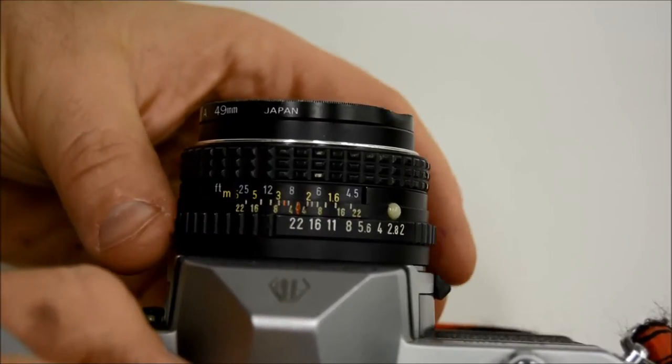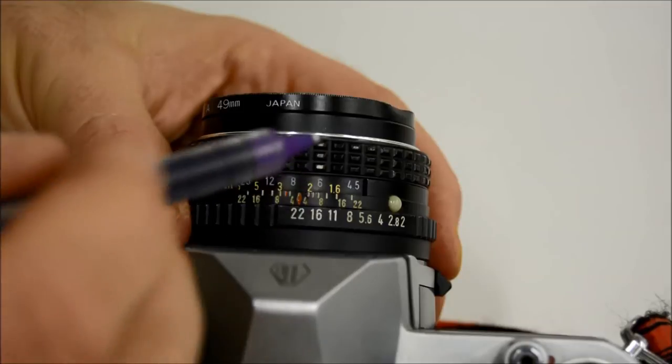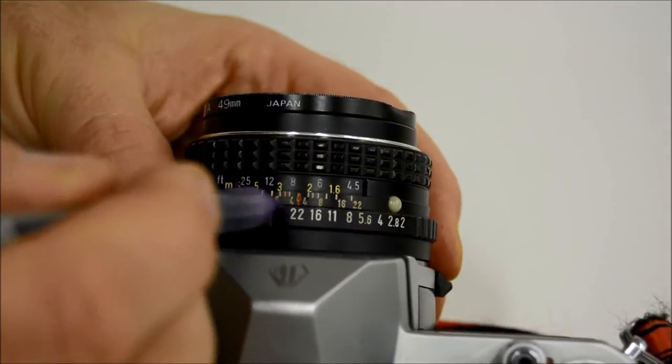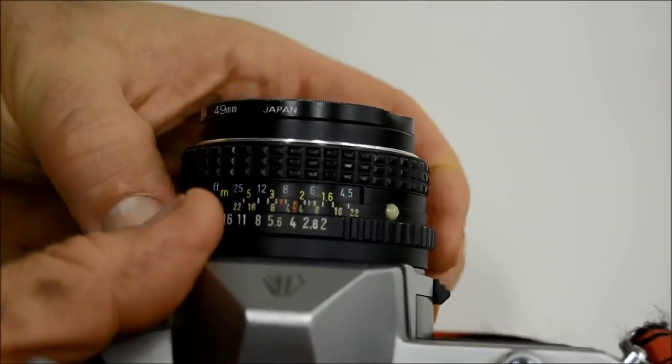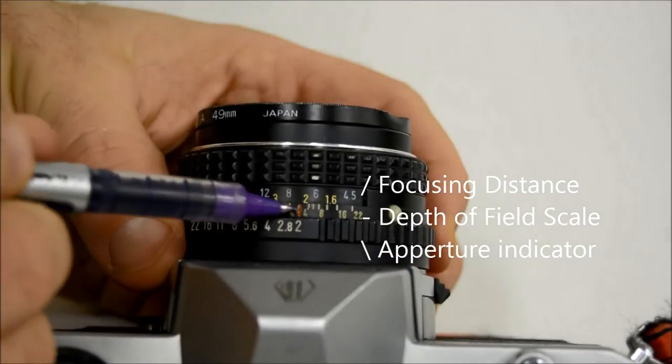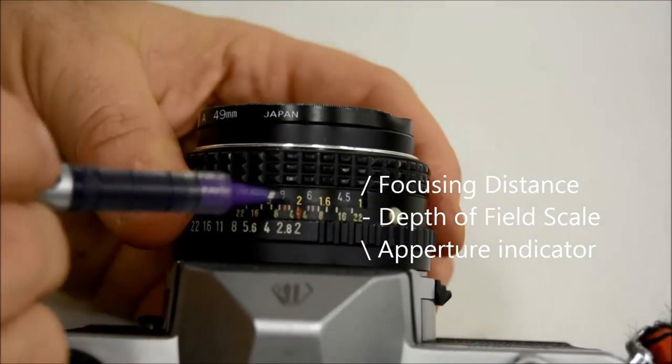Now, how do you figure out what you're actually going to get in focus? So if you look at this little depth of field scale at f2, you only get things that are right at the spot where you're focusing. So in this case, at 2 meters away.